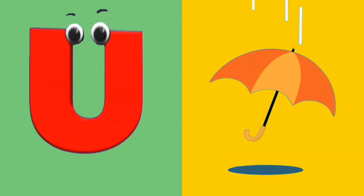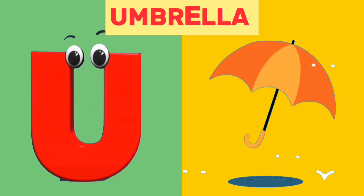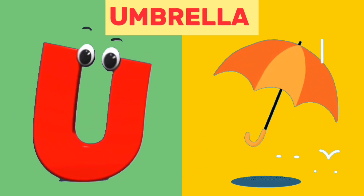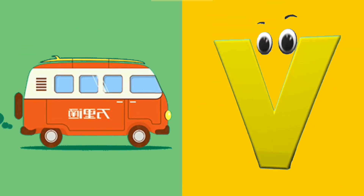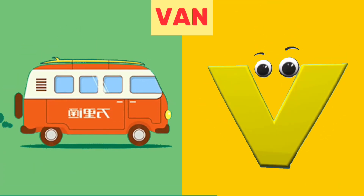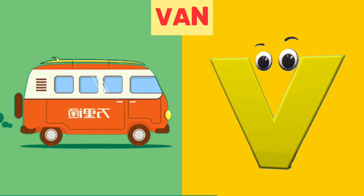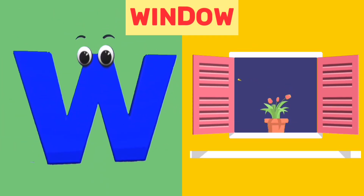U is for umbrella. U, u, umbrella. V is for van. V, v, van.